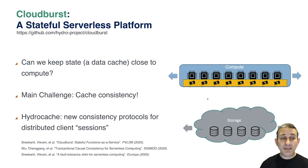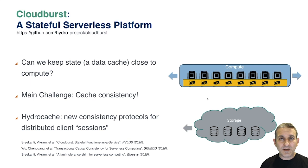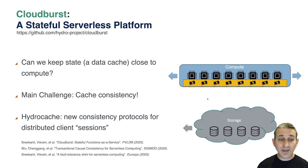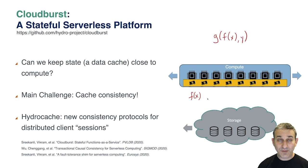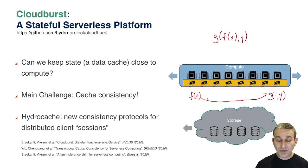Cloudburst is the stateful serverless platform we built above Anna. The question we were asking is: can we avoid round-tripping to storage every time you compute, while still allowing compute to be disaggregated from storage so each can be scaled independently? The main challenge is ensuring that not only is distributed storage consistent, but caches are consistent with storage and with each other. For example, when computing g(f(x, y)), f gets scheduled on one machine and g on another — whatever's in g's cache must be consistent with f's cache. We developed protocols called Hydro Cache, which provide new consistency for distributed client sessions and give programmers nice consistency models with these performance optimizations.